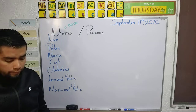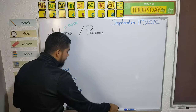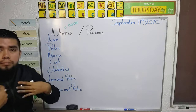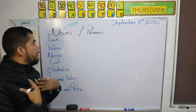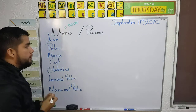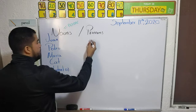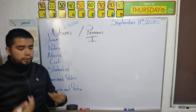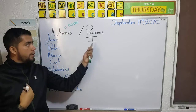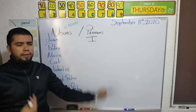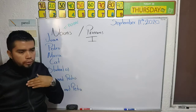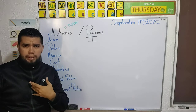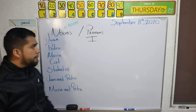Now, pronouns are the substitutes of nouns. For example, Juan — I am Juan, so Juan becomes the first person pronoun 'I'. When you're talking about yourself, you use 'I', because you don't say 'Juan go to the school' — you say 'I go to the school'.